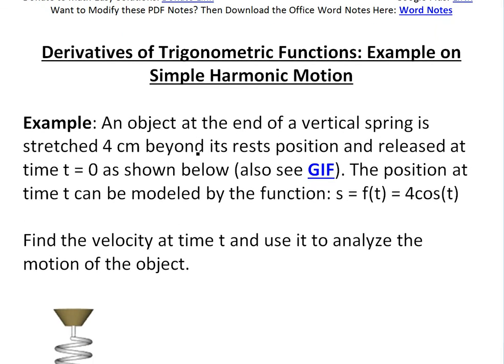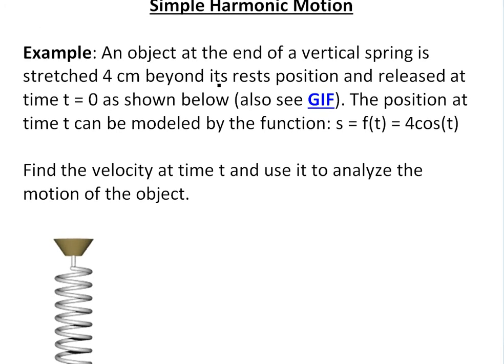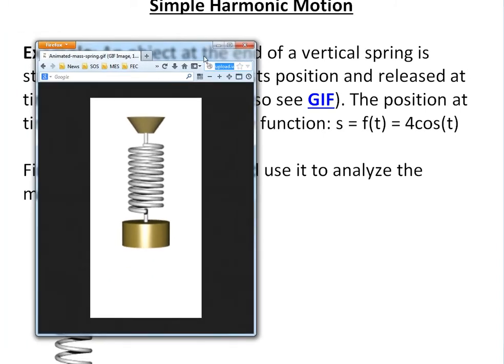The example from my calculus book states: an object at the end of a vertical spring is stretched four centimeters beyond its rest position and released at time t equals zero as shown below. You can also see this GIF on Wikipedia or click the link.